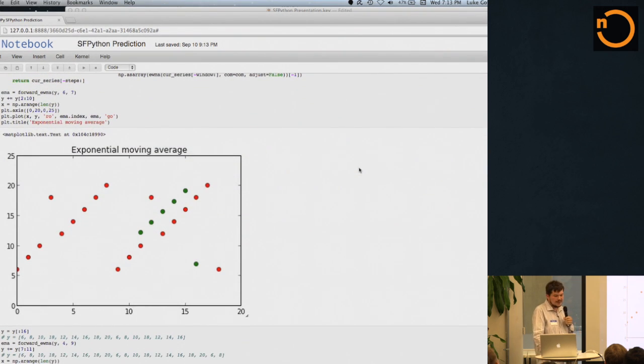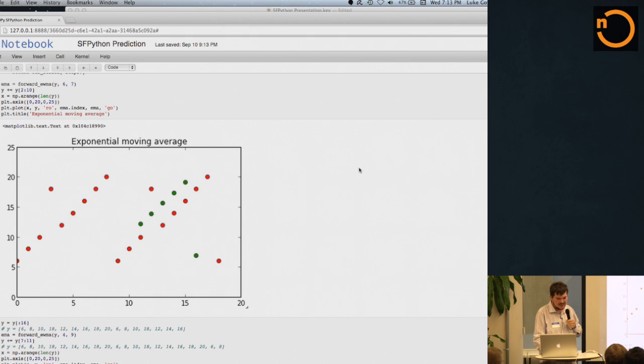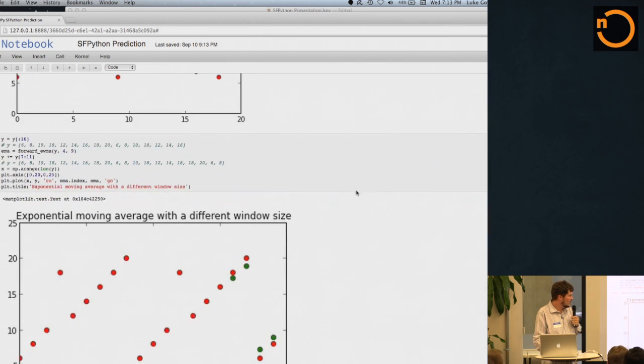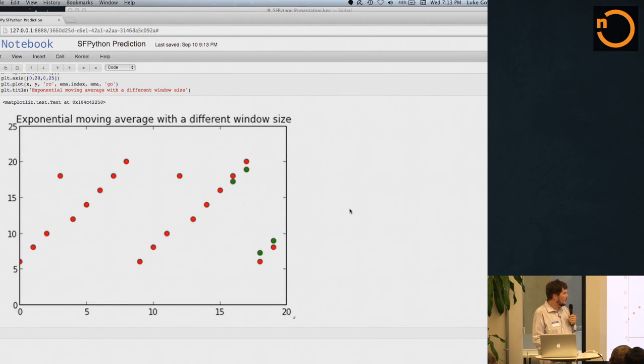The slides and the IPython notebook are going to be available for download in case you want to play with this data yourself. So let's see what happens when we do an exponential moving average. It actually does a pretty good job here. There's other parameters involved with this exponential moving average besides alpha. We can kind of tweak it a little bit and we can see what happens if we change the window size for the data that we're looking at for this exponential moving average. Green here is predicted and red is actual. If we do a different window size, a window size that matches the period of the data, we see that the predicted data points are actually a lot closer to the real data points.